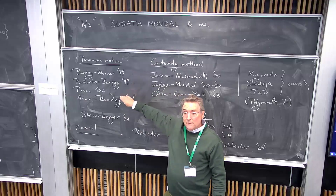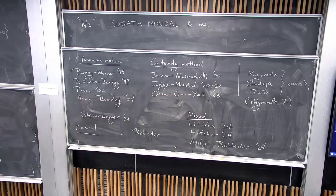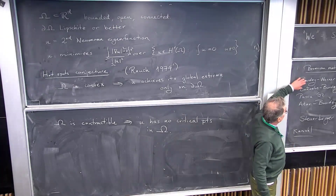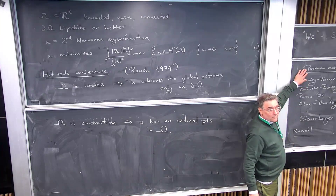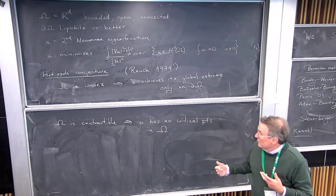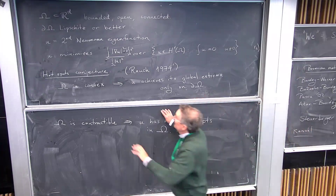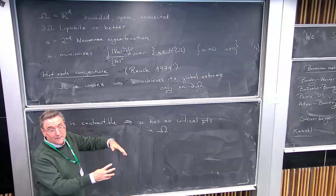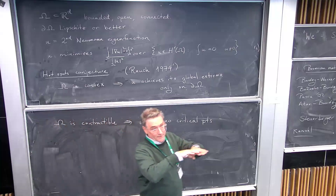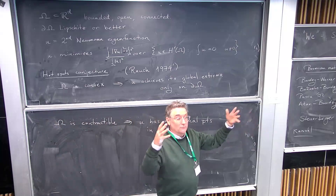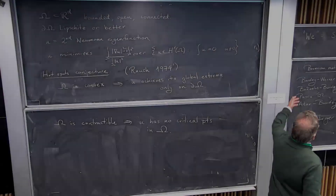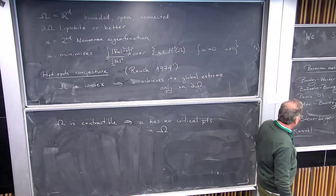Then the positive result: Bañuelos and Burdzy proved it for obtuse triangles and domains that are elongated in one direction. These results come from probability — there's an interpretation of this problem in terms of Brownian motion. The second Neumann eigenvalue tells you what happens at long time for the heat equation, which is why it's called 'hot spots.'